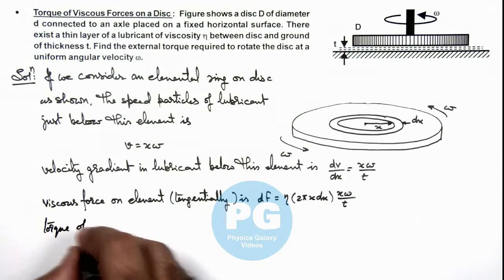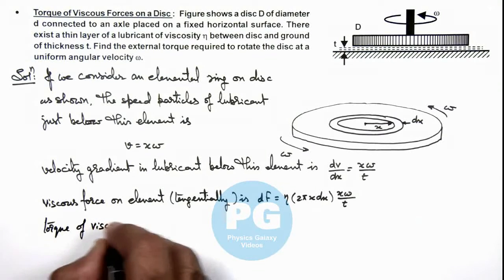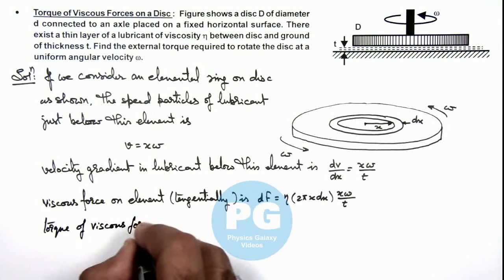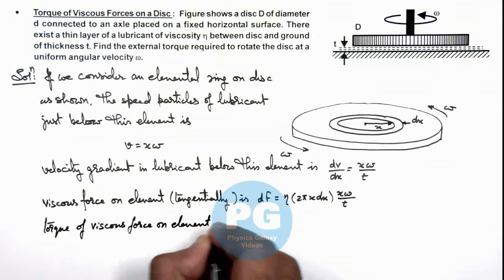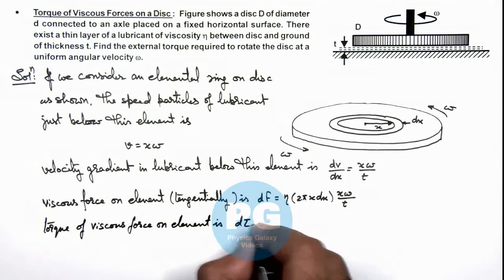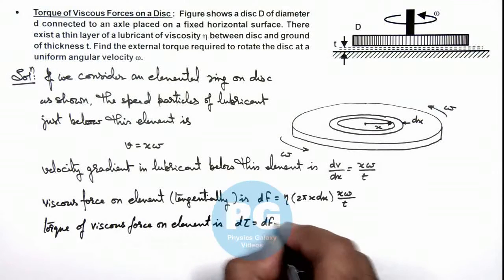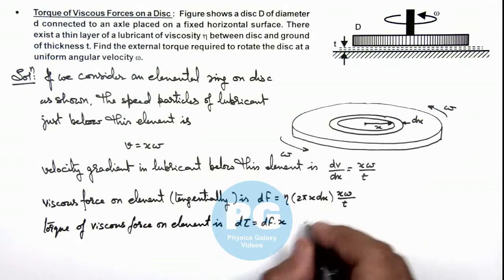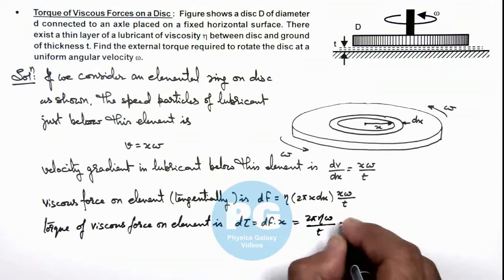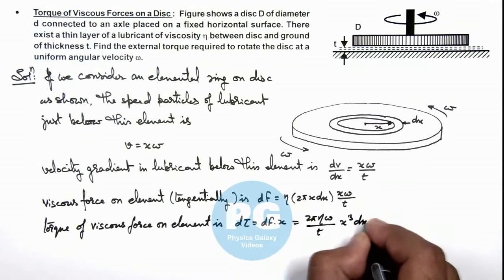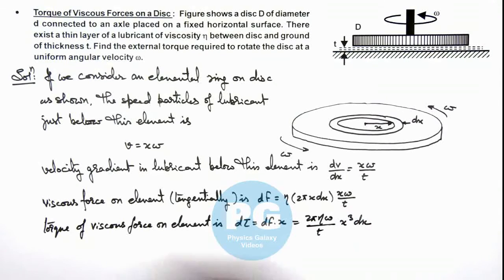So in this situation, if this is the viscous force we can now calculate the torque of viscous force on element. dτ, that can be written as df multiplied by x, and this will be given as 2π eta omega by t multiplied by x³ dx. So if we calculate the total torque on disc.